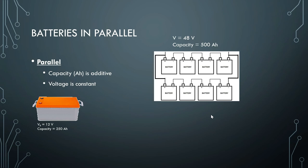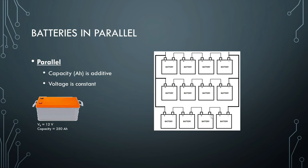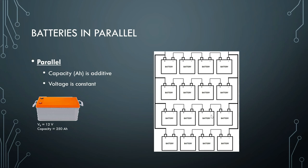If we add another string of batteries in parallel, that gives us the same voltage output of 48 volts and a capacity of 750 ampere hours. And if we connect yet another string in parallel, we still get 48 volts, and the capacity increases by another 250 ampere hours, giving this whole configuration a total capacity of 1000 ampere hours.